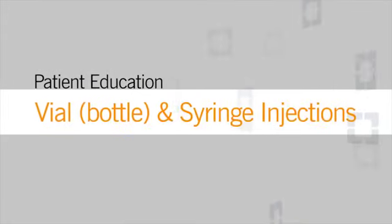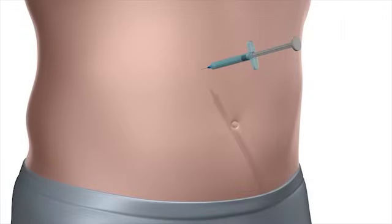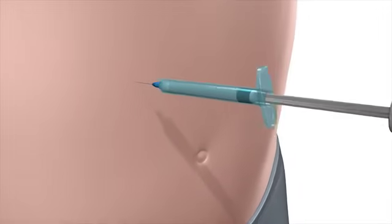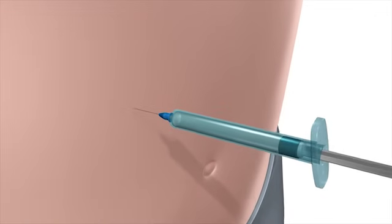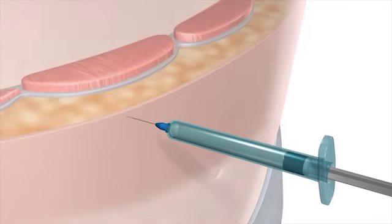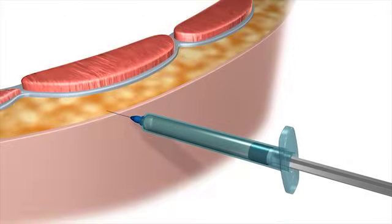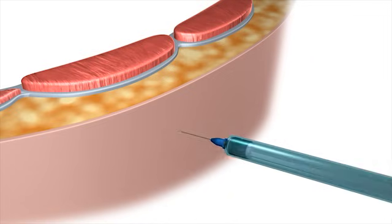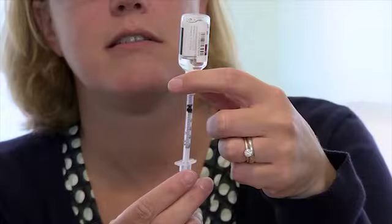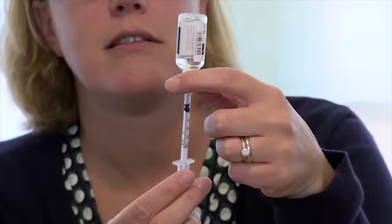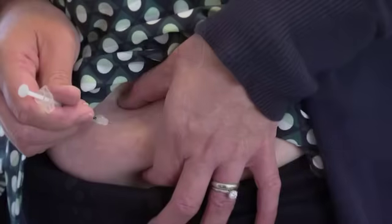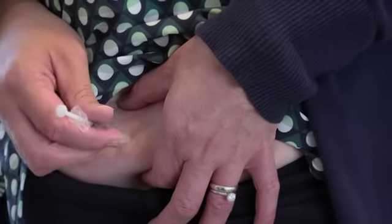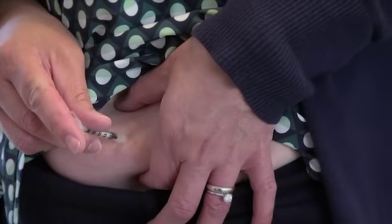An insulin injection delivers medicine into the subcutaneous tissue, which is the tissue between your skin and muscle. Subcutaneous tissue, also called sub-Q tissue, is found all over your body. Your healthcare provider has chosen insulin injections done with a syringe that is filled from a bottle of insulin as the best option for you.